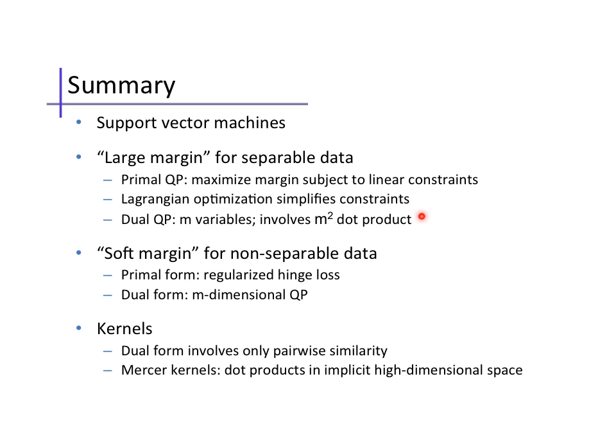We saw how to optimize it using its Lagrangian, and we saw the form of the dual quadratic program, which involves only dot product similarity between each pair of data points. The soft margin variant for non-separable data includes a penalty for margin violations, or slack term.